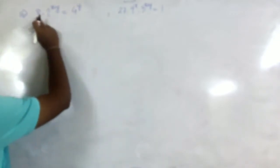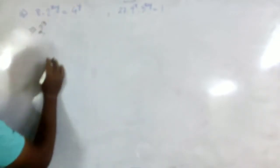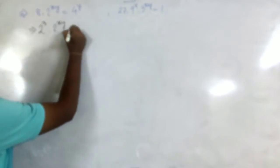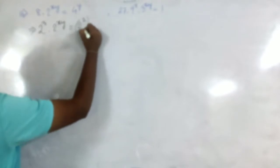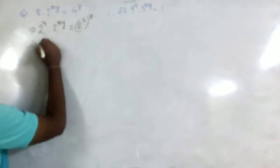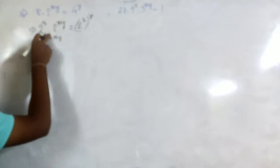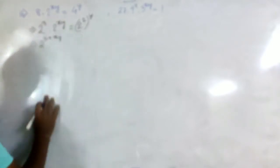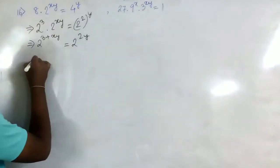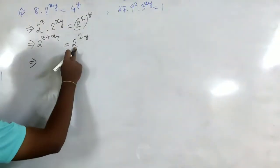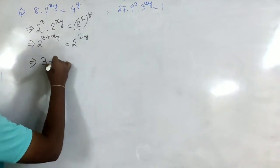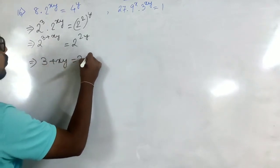What we have here is we can write 8 as 2 cubed. We have 2 to the power xy equal to 4, which we can write as 2 squared to the whole power. Now, since the bases are the same and we have multiplication, the power will be the sum of the powers. We get 2 to the power (3 + xy) equal to 2 to the power 2y. Since both sides have the same base, the exponents are equal, so 3 + xy = 2y.